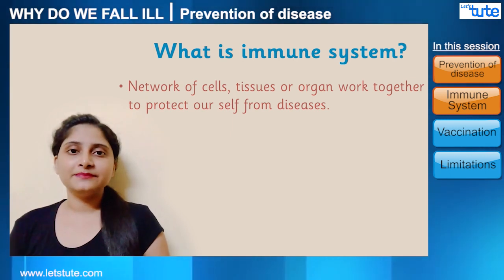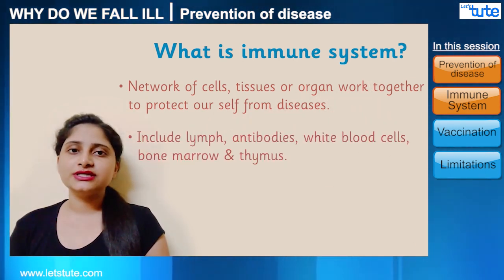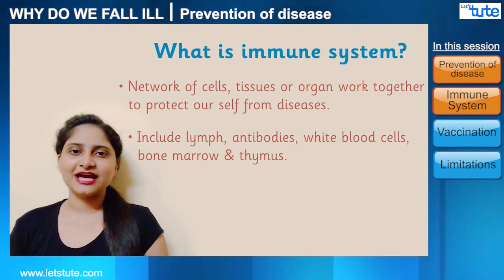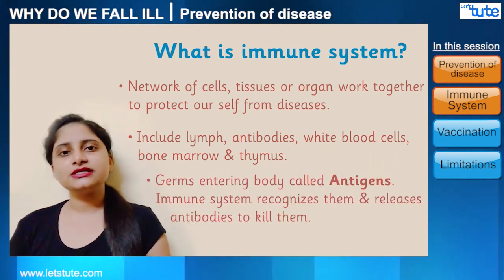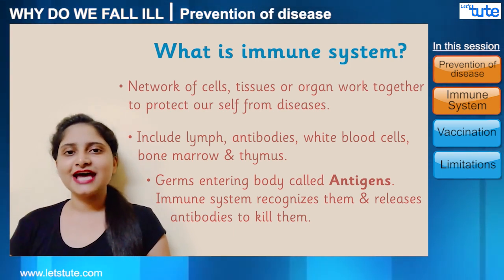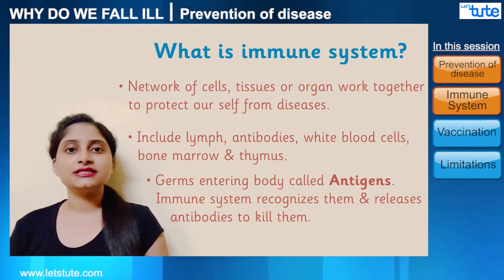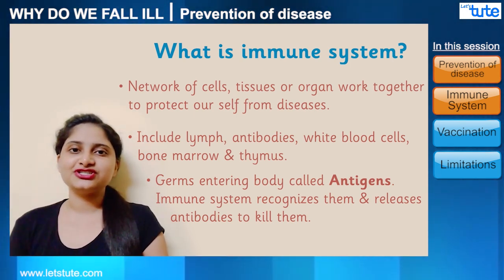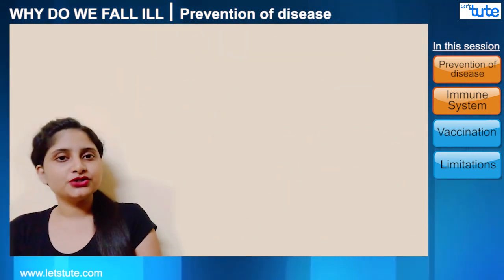The immune system includes lymph, antibodies, white blood cells, bone marrow, and thymus. The germs that enter into our body are called antigens, and as soon as the immune system recognizes them, it releases antibodies which destroy these germs.